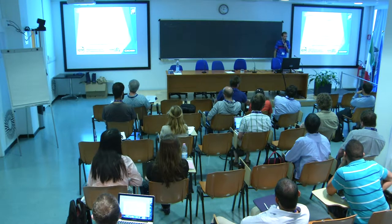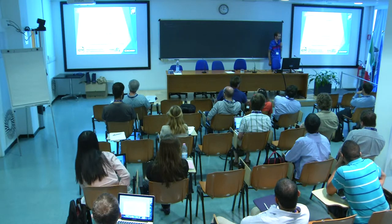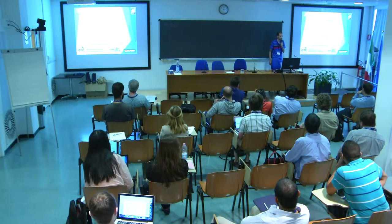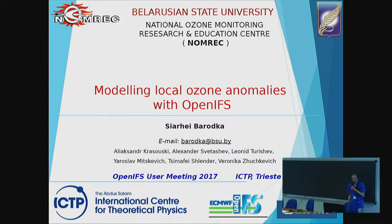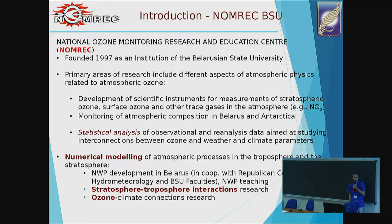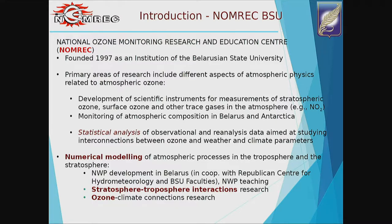It is one of the research centers of the university, and I'm going to tell a bit about one of our ongoing topics of research, which is related to analysis and modeling for ozone anomalies. Our primary area of research is developing actual instrumentation for ozone measurements, which is mainly optical passive remote sensing — the hardware-oriented part. But another part, which I belong to, is doing analysis and numerical modeling, related to stratosphere-troposphere interactions and ozone-climate connections.